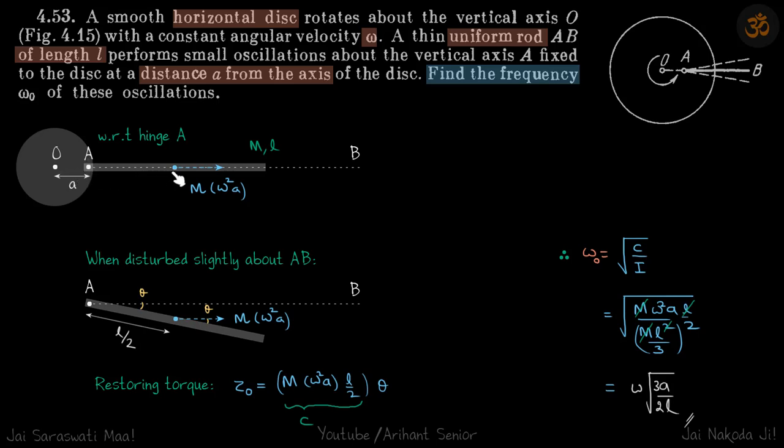So pseudo force on the center of mass will be in opposite direction, and that will be M of rod into omega square A. Again, we are observing this whole motion with respect to the hinge A. The acceleration of this point is omega square A inside, so pseudo force on the center of mass will be M omega square A outside.